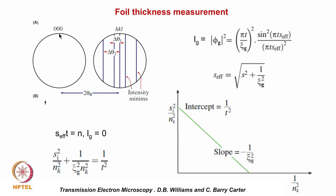Regarding the relation with thickness: if the Bragg condition is exactly satisfied, there should be a dark line at the center of the disk and a bright line in the central spot. As the beam is conical, other beams are away from Bragg condition and S varies continuously. Wherever S_eff × T becomes an integer, dark fringes appear; in between, bright fringes appear — producing a set of fringes depending on the separation and lattice parameter.